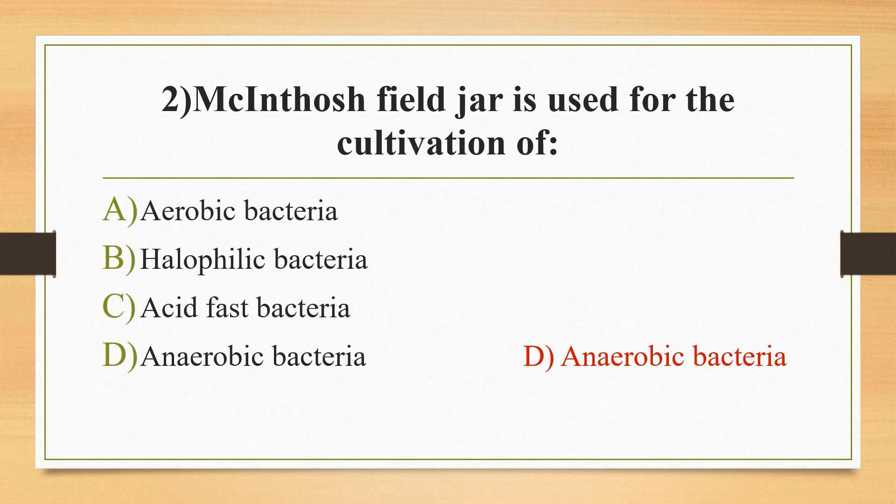Other methods for anaerobic cultivation include the gas pack system, where absorption of oxygen occurs chemically using alkaline pyrogallol. Another method is the anaerobic chamber or anaerobic glove box method.